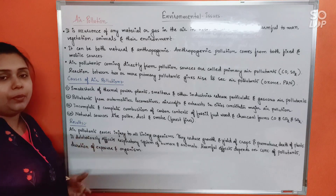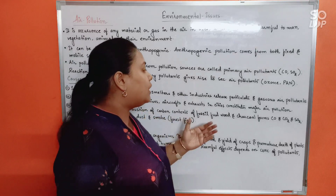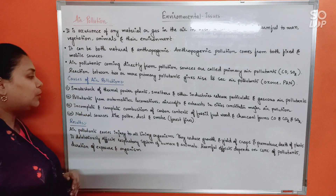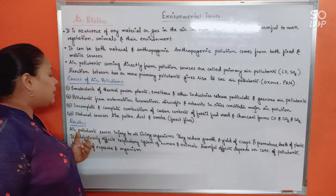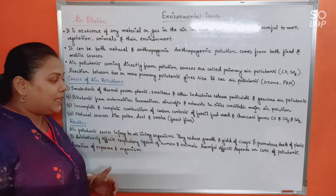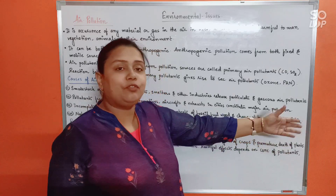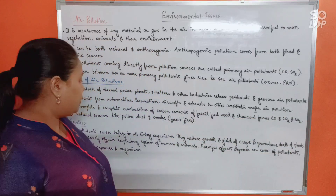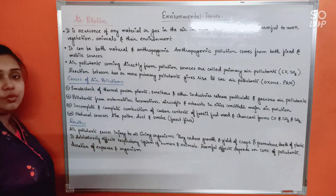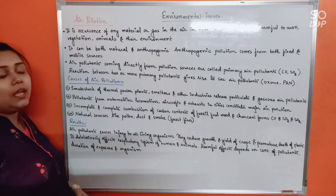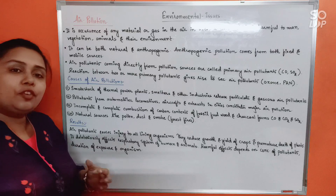Causes of air pollution include smokestacks of thermal power plants, smelters, and other industries that release particulate and gaseous pollutants. Pollutants from automobiles, locomotives, and aircraft constitute major air pollution in cities. Incomplete and complete combustion of fossil fuels, wood, and charcoal forms carbon monoxide, carbon dioxide, and sulfur dioxide. Natural sources like coal dust and smoke from forest fires are also causes of air pollution.